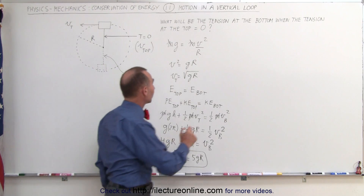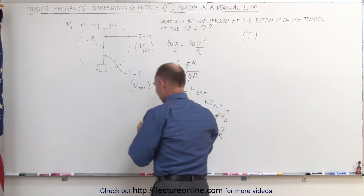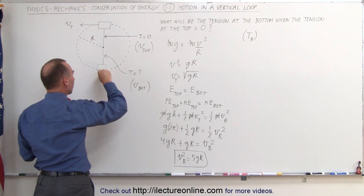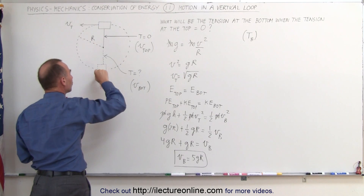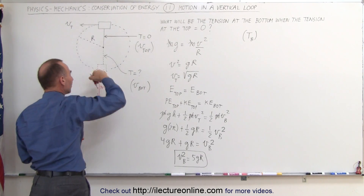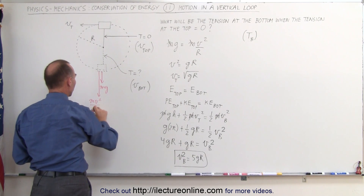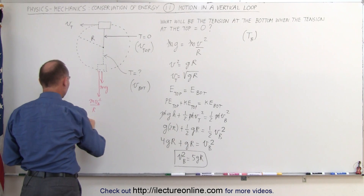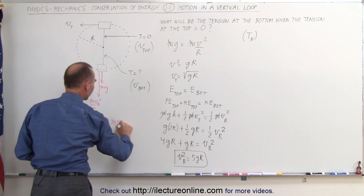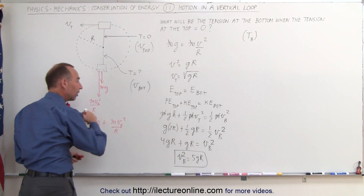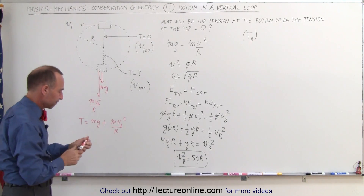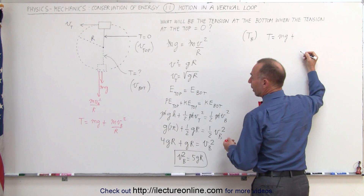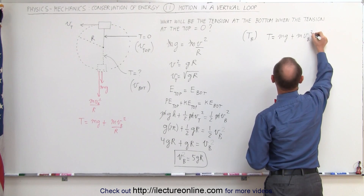Next, we need to find the tension at the bottom — that's the final step of the process, T sub b, tension at the bottom. We have the weight pulling down, mg, plus what we call the centrifugal force — the fictitious force that seems to push the object to the outside — which is mv² over r. At the bottom, that's m times v_bottom squared over r. So the total tension on the string would be mg plus m times v_bottom squared over r, both contributing to the tension on the string.